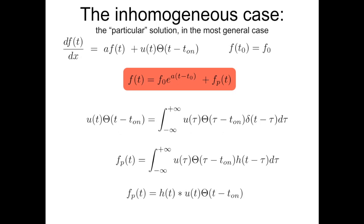To make it short: the particular solution of this non-homogeneous ordinary differential equation is the convolution of the input — the non-homogeneous term — by the impulse response H(T).